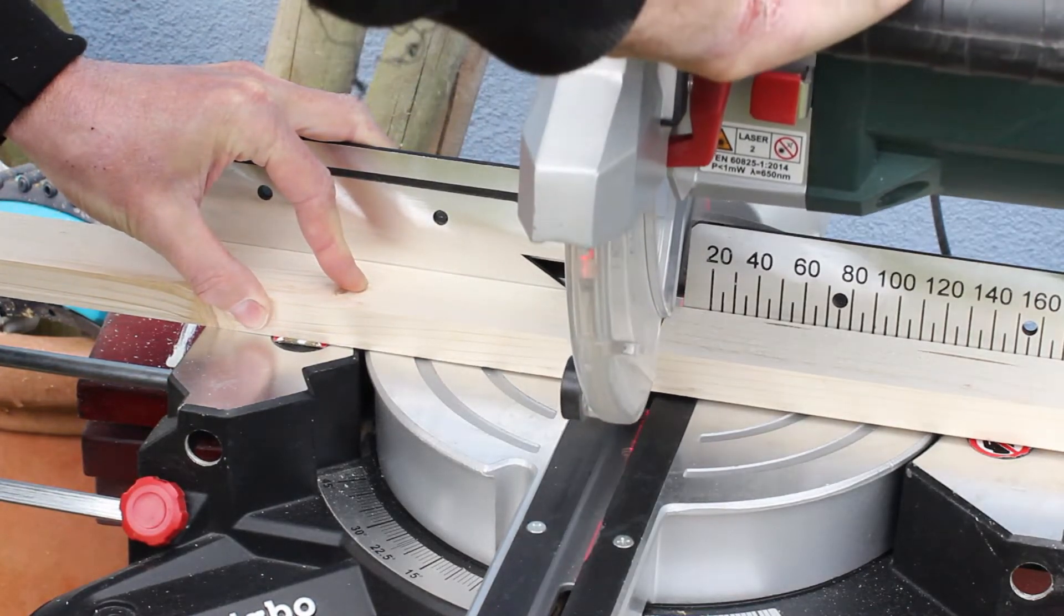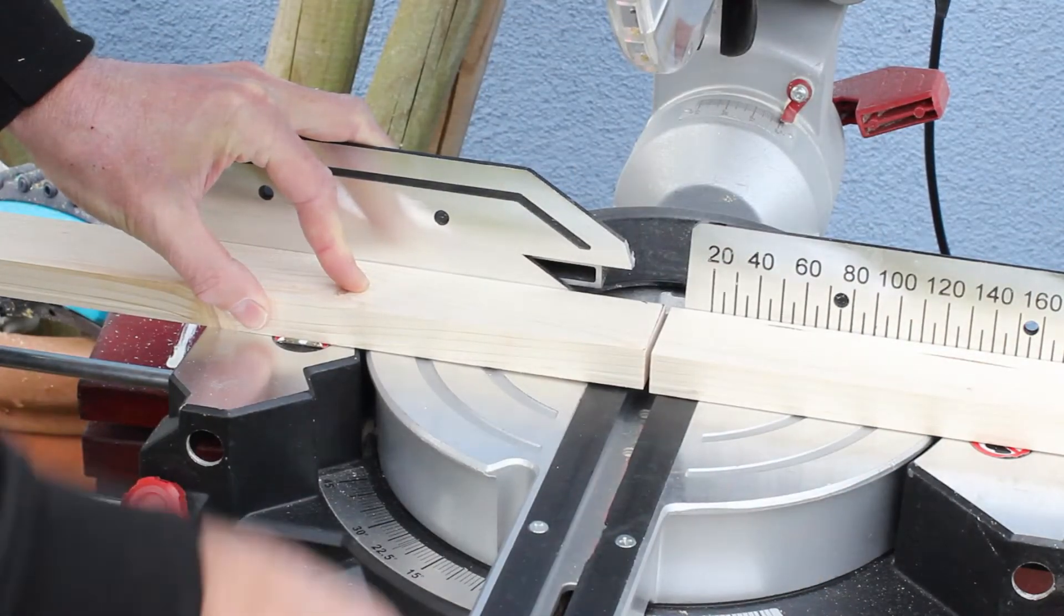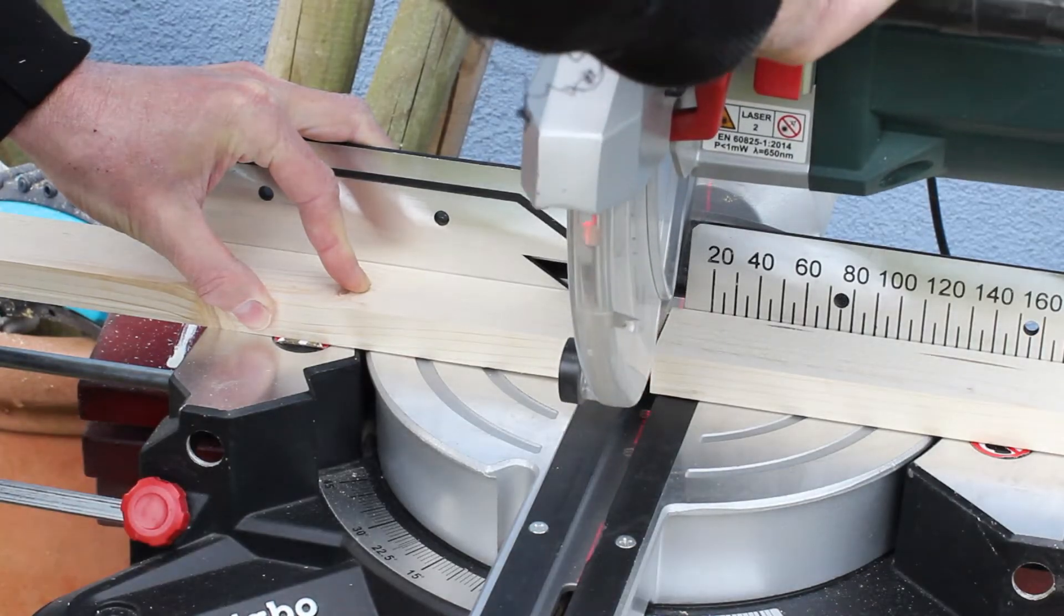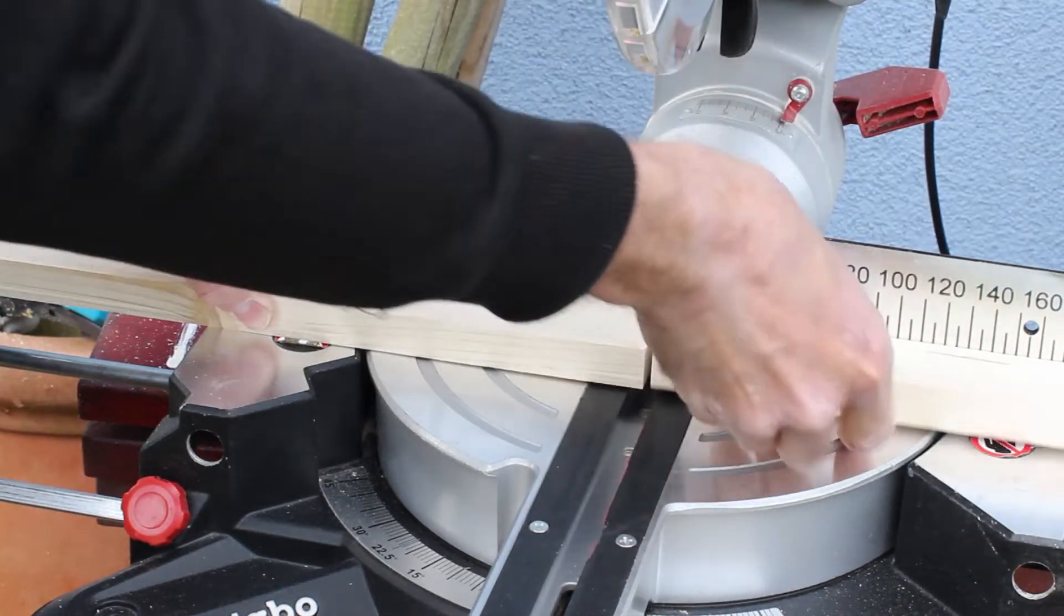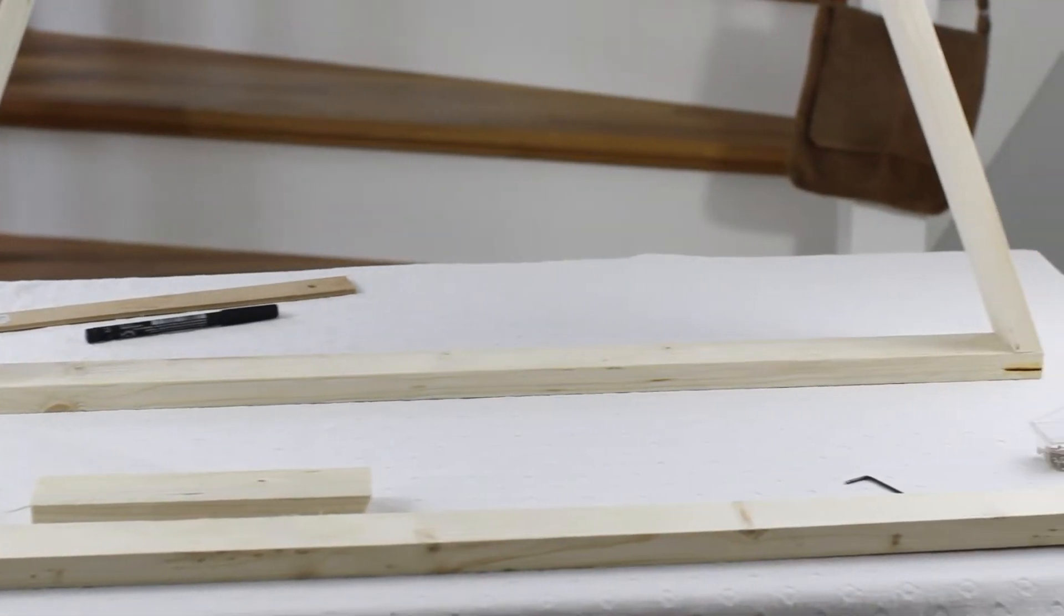And then we take it over to the mitre saw again and just cut it straight down. That wasn't quite straight so we do it again. Now we've got the bottom piece of our triangle.